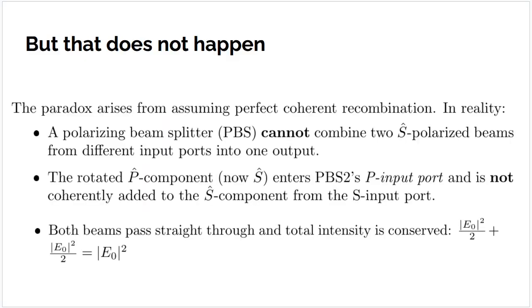Well, in this case, the paradox arises from assuming you can do a perfect recombination. You can't do that. In reality, a polarizing beam splitter cannot combine two of what are called S-polarized beams from different ports into one output.